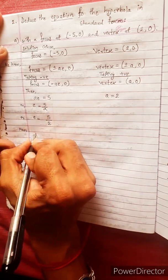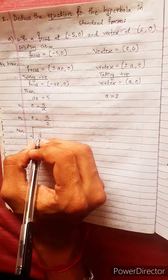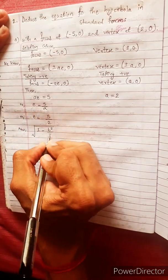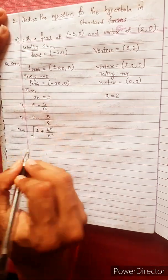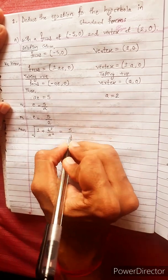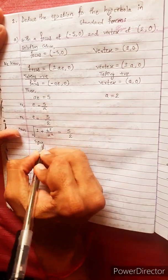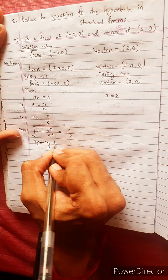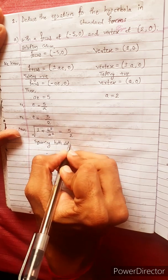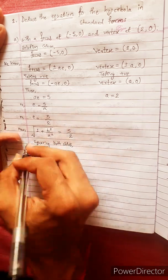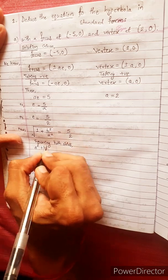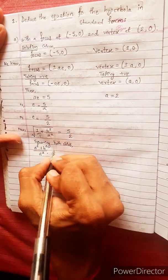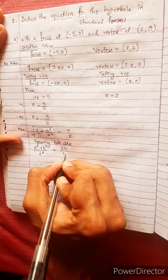Now eccentricity formula under root. Under root 1 minus b square by a square is ellipse. Plus for hyperbola. Hyperbola equals to 5 by 2. Just squaring both sides. We get root square, a square plus b square divided by a square. Taking LCM equals to 25 divided by 4.